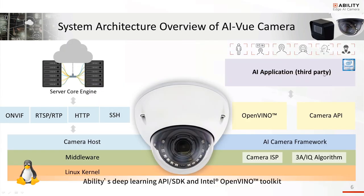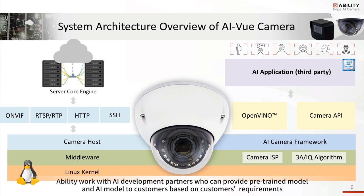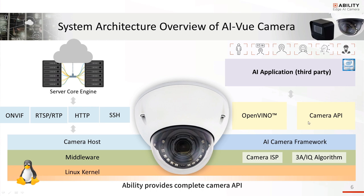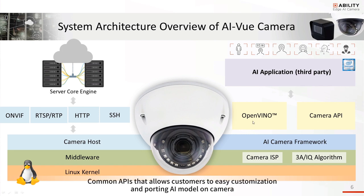Ability's deep learning API SDK and Intel OpenVINO Toolkit allow third parties to highly integrate AI algorithms and pre-trained models from ISVs, optimized on Ability's AI View Camera architecture. Ability works with AI development partners who can provide pre-trained models to customers based on their requirements. Ability also provides a camera API for image processing and post-processing, and an OpenVINO command API that allows easy customization and porting of AI models onto the camera.